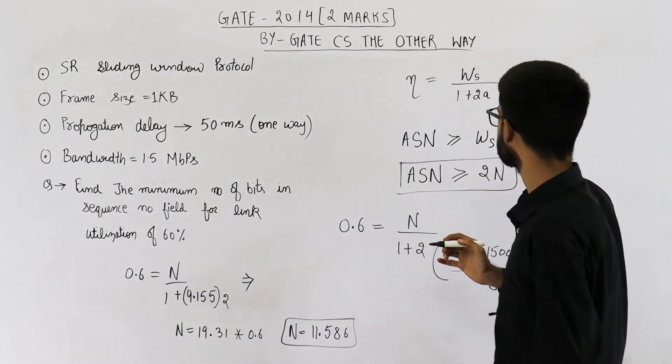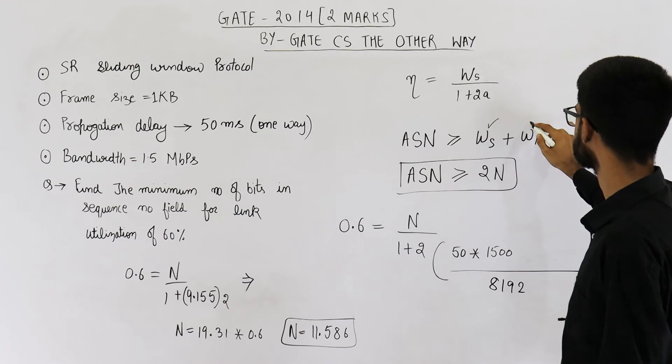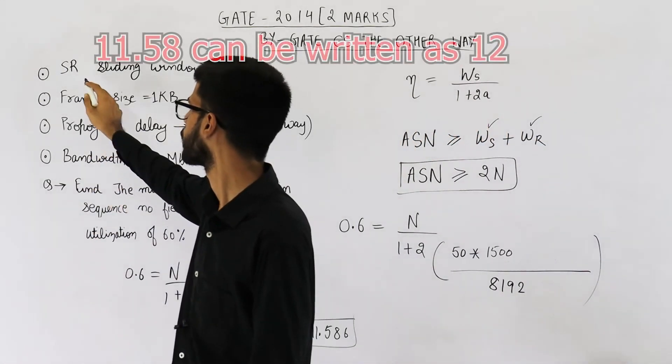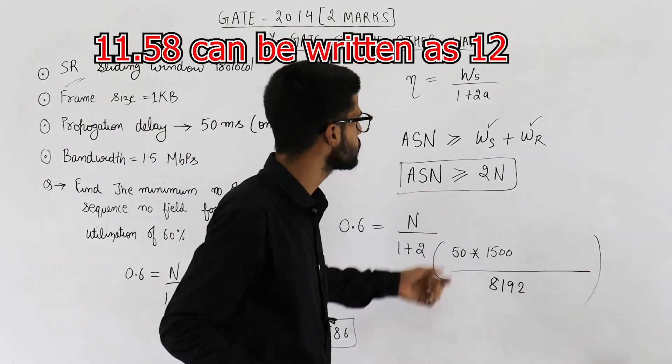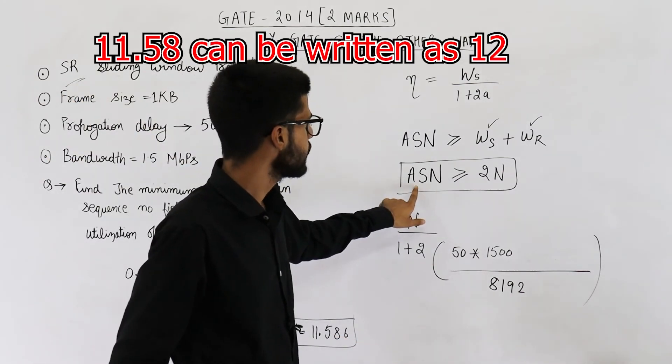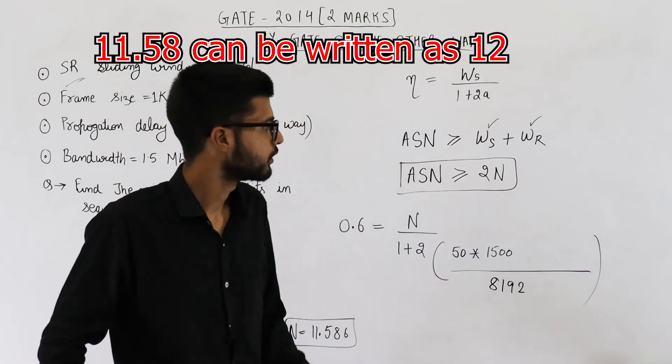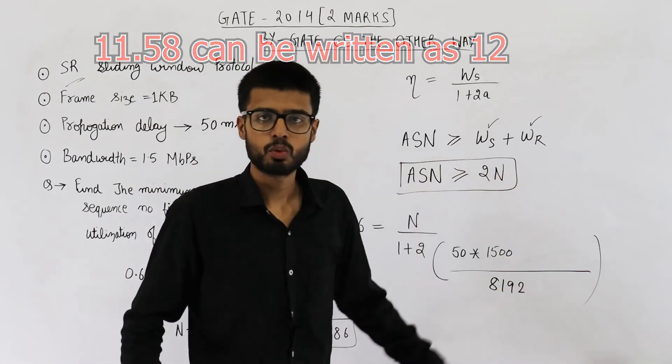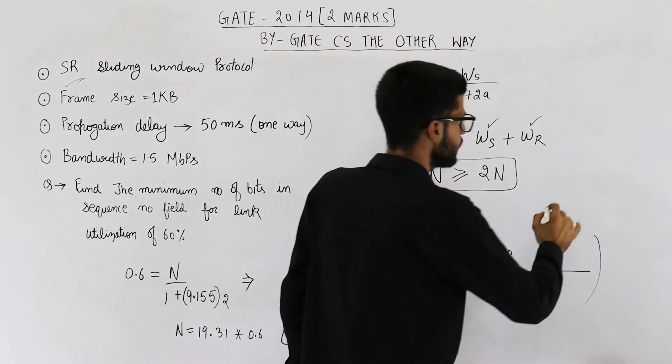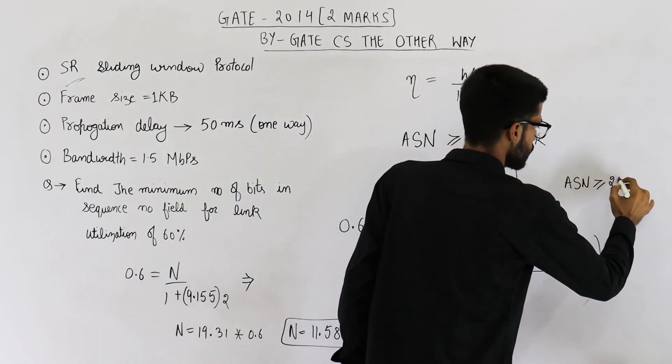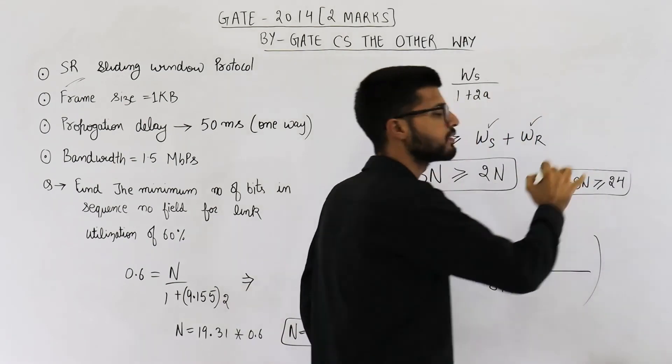Now we have already seen that sender window size and receiver window size will be equal in case of SR protocol. So let's substitute the values. That means ASN will be greater than or equal to 24. 12 plus 12 will be 24. So we need at least 24 sequence numbers.